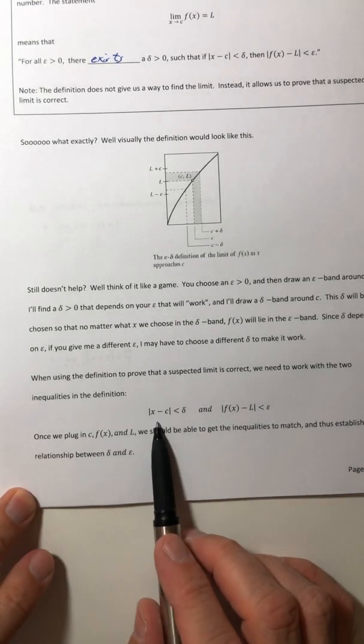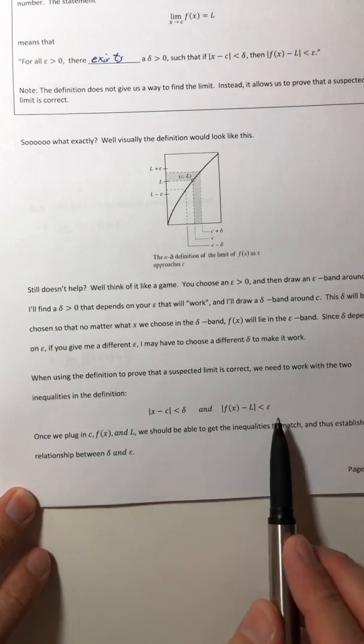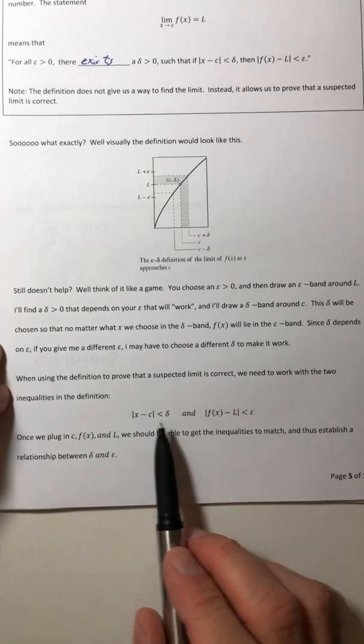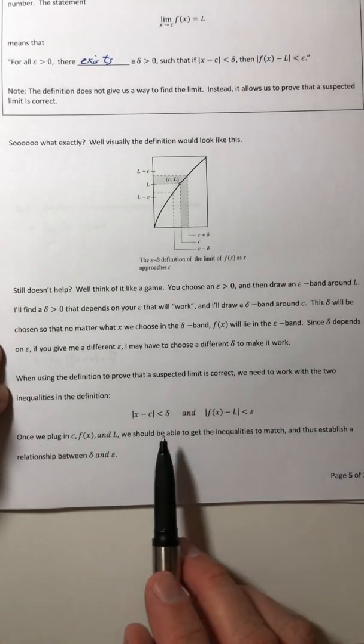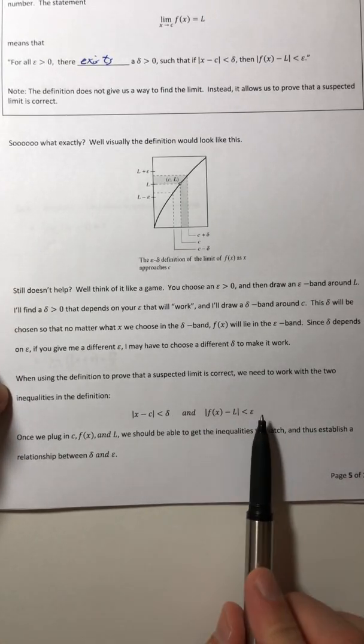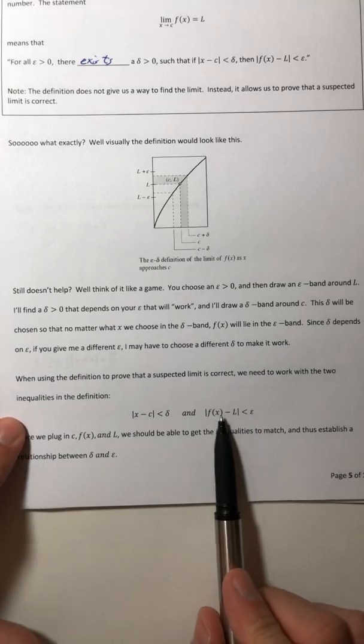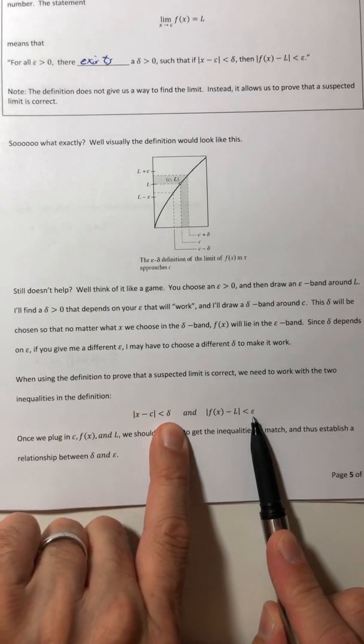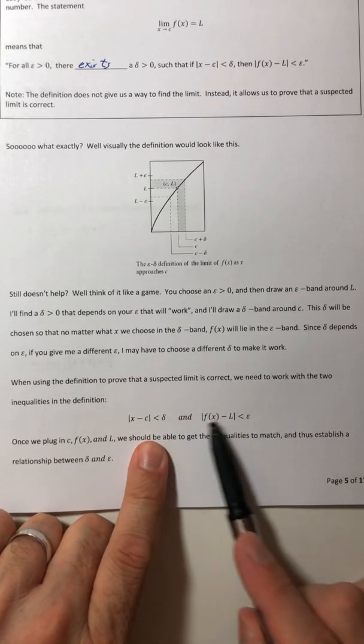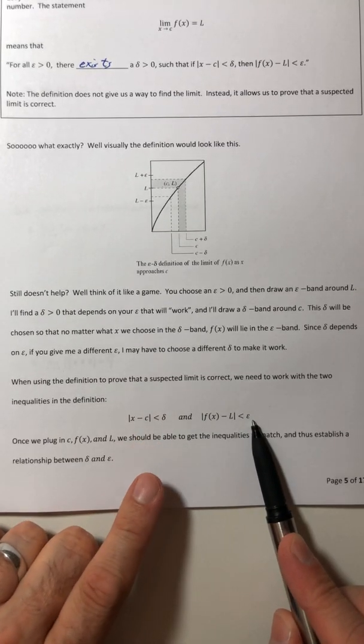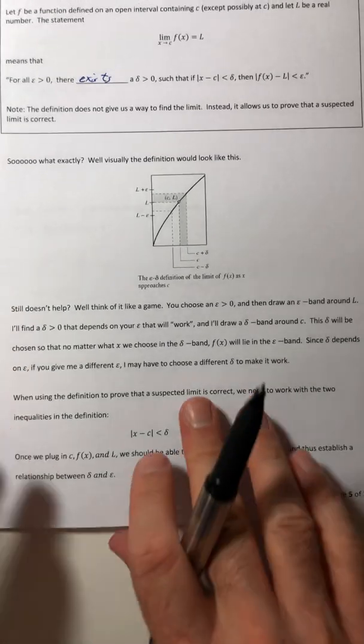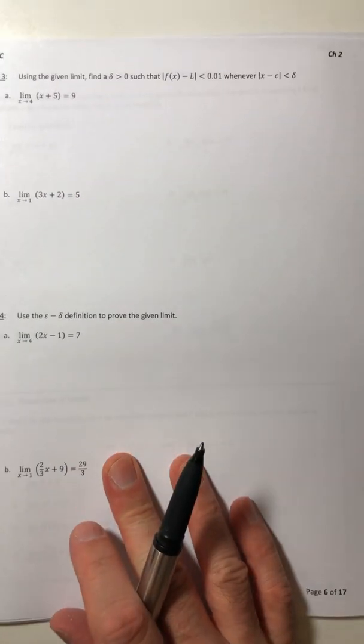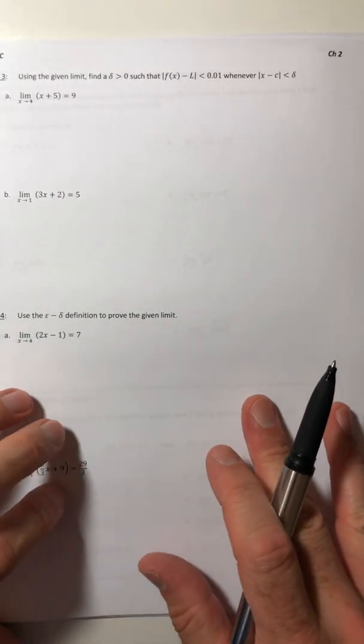Your goal is to get these two inequalities to match up. And once you do, you can establish a connection or a link between delta and epsilon. Because once these guys are the same, then we can equate whatever this is and whatever this is - they would have to be equal. So let's see exactly how to do that. And I know it's a little scary. Don't panic. You'll be just fine.